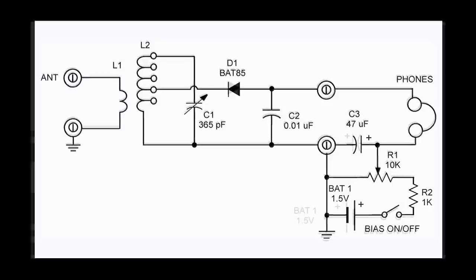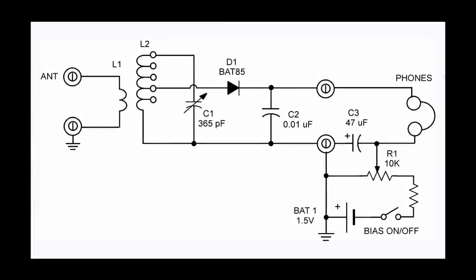If you flip the diode in the other direction so it's a positive going detector, you need a negative bias. So we flip the diode, we flip the capacitor, and flip the battery, and voila, bias Schottky detector.